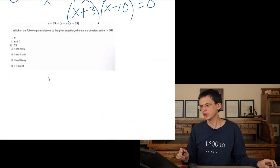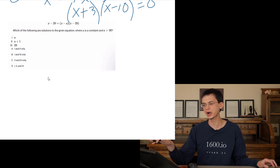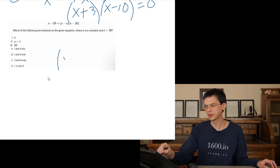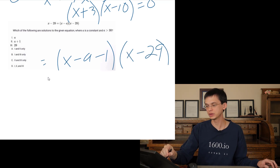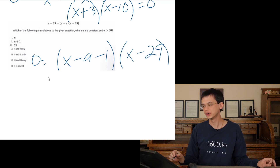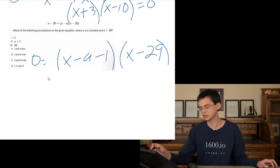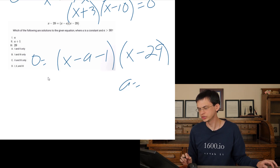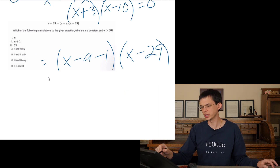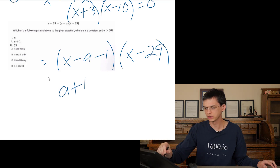There's an x minus 21 term and x minus 29 term. Subtracting x minus 29 from the left side, we get x minus a minus 1 times x minus 29 equals 0. The solutions are x equals 29, or when a equals 29, giving x equals a plus 1.